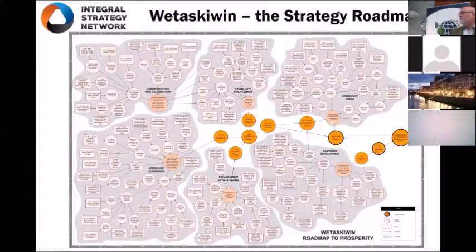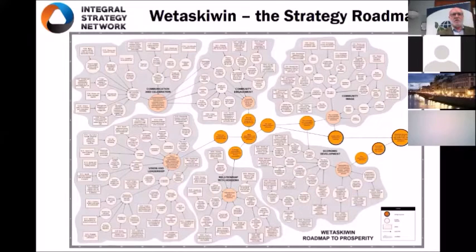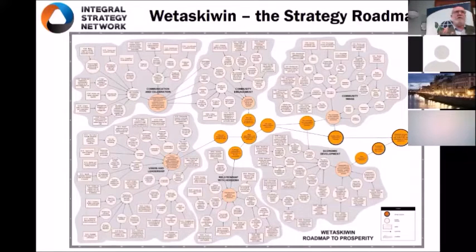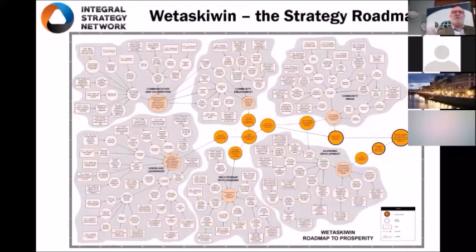This is the Wetaskawin Strategy Roadmap, done in 2008. There are a number of core capabilities they wished to concentrate on: communication and celebration, vision and leadership, and relationship with the First Nation to the south of the city. The participants included the First Nation, the city, the county, and a small community to the north. This was one of the first projects I worked on that had a First Nation and Aboriginal focus — they're as much a part of this community as everybody else. They need to be at the table developing a solution together, rather than being told 'that's your problem, go away.' We want you as part of the solution.